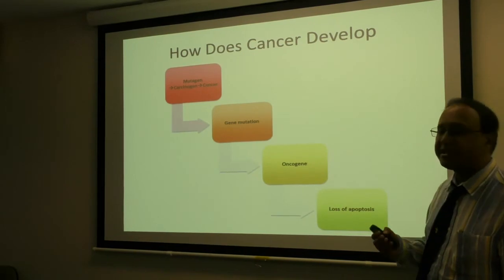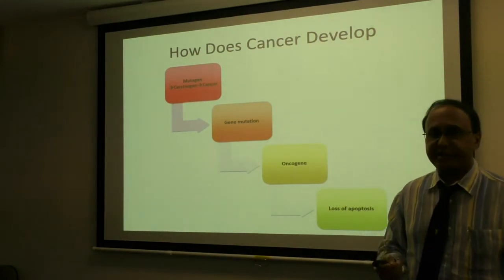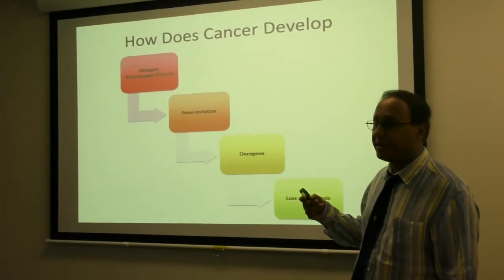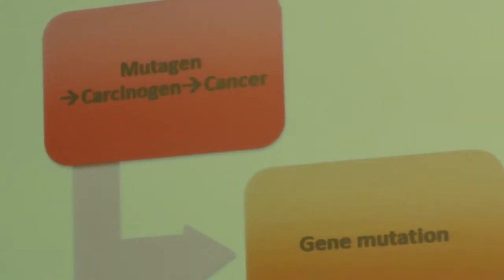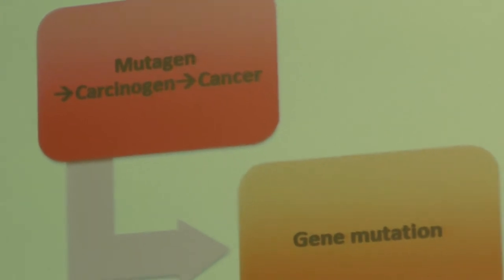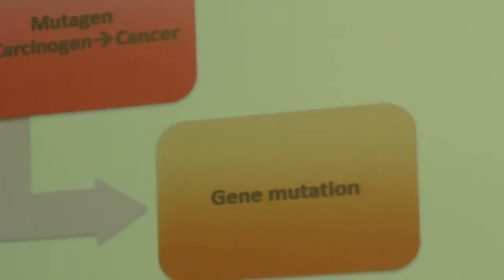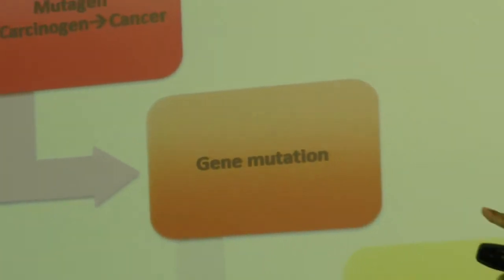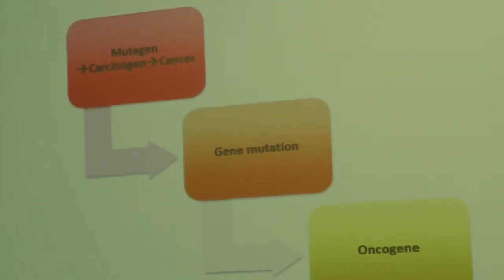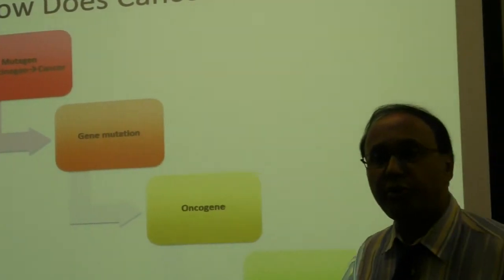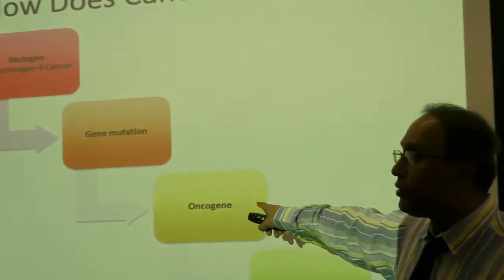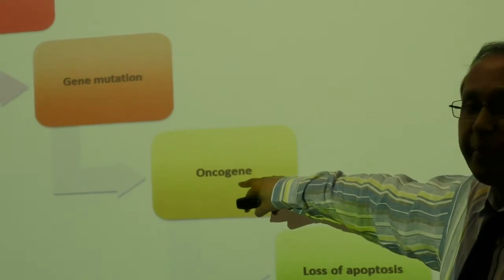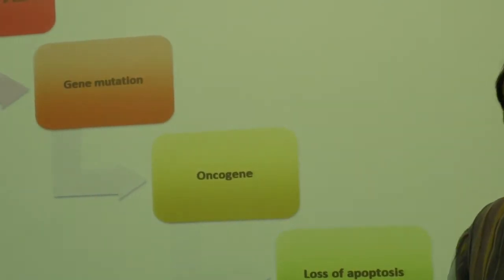Now we know that some of these factors can cause or initiate a cancer effect. The ones that cause a cancer are called carcinogens, whereas a mutagen is just something that causes a mutation in the genetic material. So all carcinogens are mutagens. Moving on from there, this carcinogen will cause a gene mutation, and you may require two or three gene mutations before there is a change in the structure of the DNA at an area called the oncogene, which then produces proteins that cause uncontrolled growth of a cancer cell.